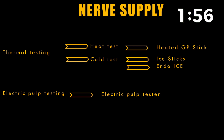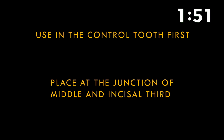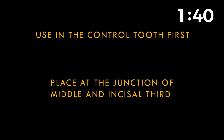Electric pulp testing can be carried out with the help of an electric pulp tester. For all these tests, the first step is to choose a control tooth — preferably a contralateral normal tooth — and to establish a base value. Then, the tooth in question has to be evaluated. Preferably the test material is placed at the junction of the middle and incisal third of the tooth.